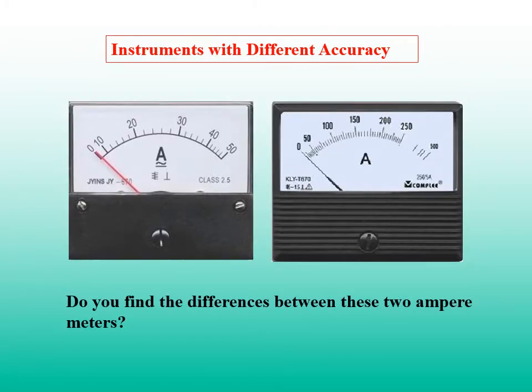Do you find the differences between these two ampere meters? The left one has a smaller measuring range of 50 ampere, and the one on the right has a much larger measuring range of 500 ampere. However, the smallest division for the meter on the left is 2 ampere, while the smallest division for the meter on the right is 5 ampere. The measuring precision for the left meter is better than the one on the right.